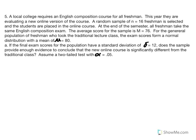Number 5. A local college requires an English composition course for all freshmen and is evaluating a new online version. A random sample of 16 freshmen is placed in the online course. The sample exam score is m equals 76. For the general population in the traditional lecture class, the exam score forms a normal distribution with mean 80 and standard deviation 12. Does the sample provide enough evidence that the online course is significantly different?